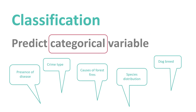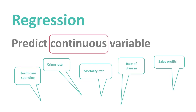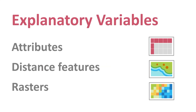Random forest can be used for classification — predicting a categorical variable — such as presence or absence of a disease, type of crime, cause of a forest fire, species distribution, land cover classification, or dog breed. It can also work with continuous variables for regression: healthcare spending, crime rates, mortality rates, rates of disease, or sales profits. Explanatory variables can be expressed through three types of parameters: attributes, distance features, and rasters.